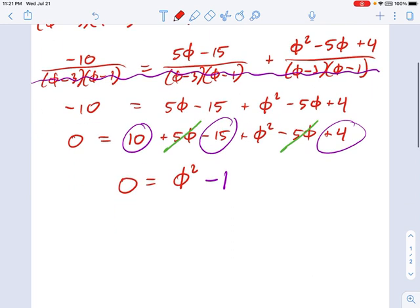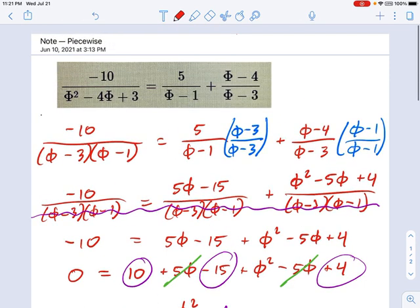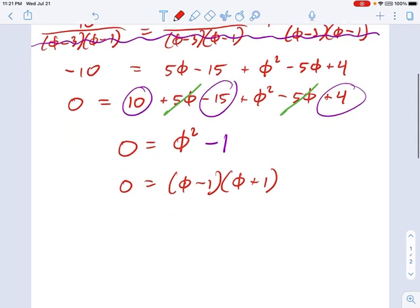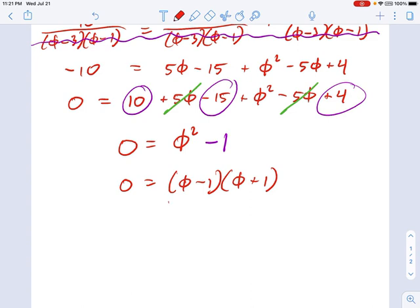I sure hope you guys can factor this one. It's phi minus 1, phi plus 1. That's our equation. This is what it's equivalent to. Got a lot simpler from that earlier one, right? So what are my two solutions? Well, from this part right here, I get phi equals 1. From this part right here, I get phi equals negative 1. So those are good solutions. Let's see if they work.